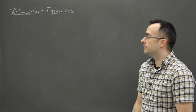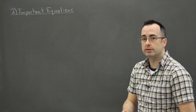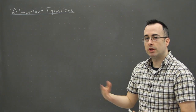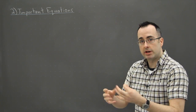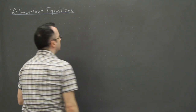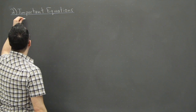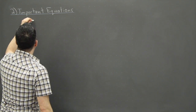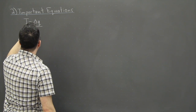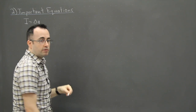The second thing we're going to talk about in circuits is important equations. In the analogy I talked about, I mentioned a lot of words, and I just want to make sure that the equations are firmed up — that we know what we're talking about here. So the very first one is current: I equals delta Q over delta T.